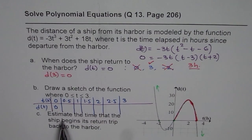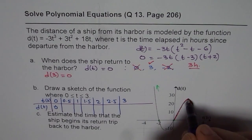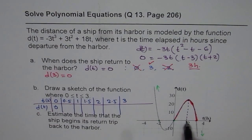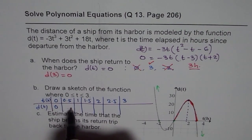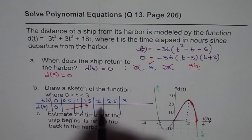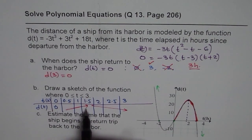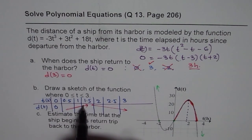Part C is estimate the time that the ship begins its return trip back to the harbor. From the graph, you can very clearly see that that is the turning point. On the graph itself you can estimate. It is less than 2. You will see the values. It is increasing from here to here, then it starts decreasing until it becomes 0 at this point.